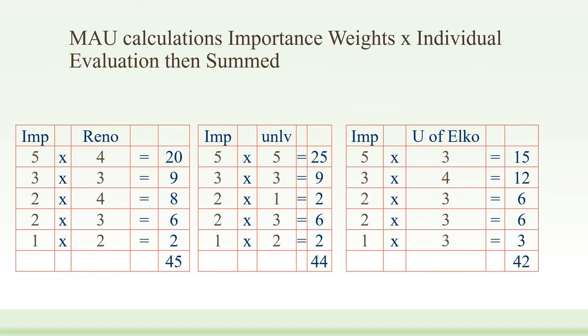The multi-attribute calculation looks like this: importance weight times the individual evaluation, then summed. For instance, on Reno, the quality of education importance was five. Reno scored four, so they got 20 points. In terms of cost, the importance was three. Reno was evaluated as three, so they get nine points.